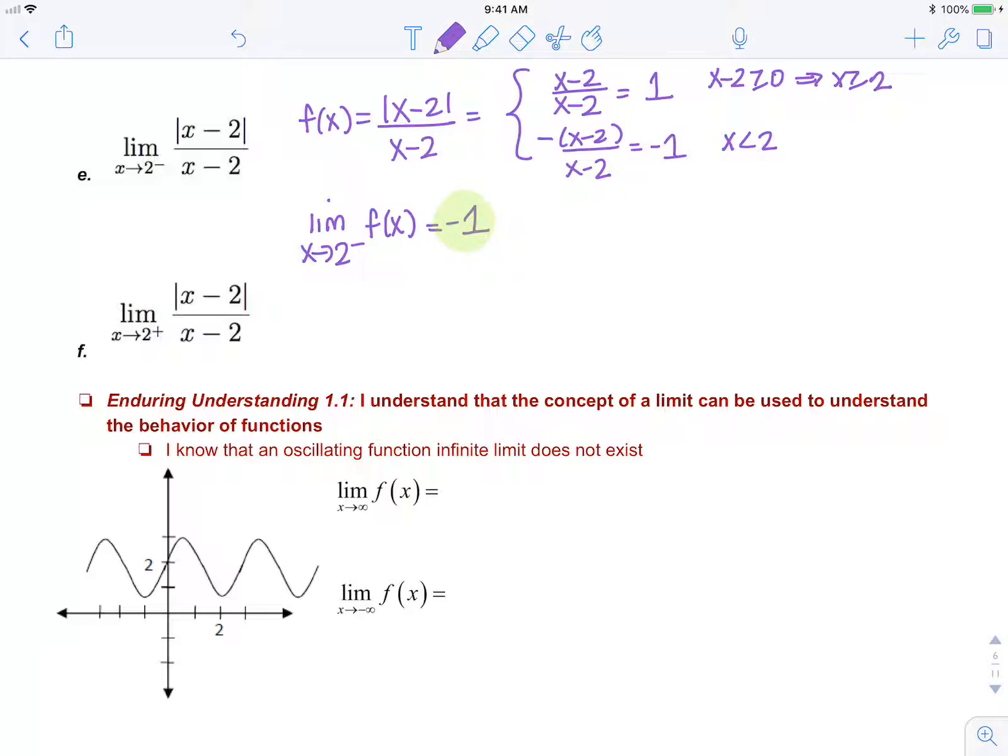Now for part f, we want the limit as x approaches 2 from the right of f of x. That's for everything greater than or equal to 2, which is the top piece, which is positive 1. So then we know that the overall limit as x approaches 2 does not exist for this function.